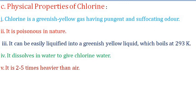Physical properties of chlorine: chlorine is a greenish-yellow gas with a pungent, suffocating odour. It is poisonous in nature. It can be easily liquefied into a greenish-yellow liquid which boils at 293 K. It dissolves in water to give chlorine water, and is two to five times heavier than air.